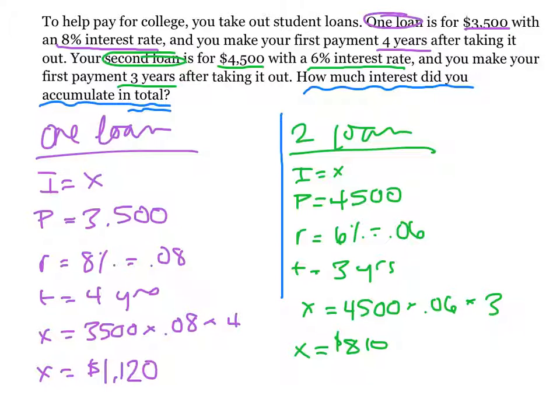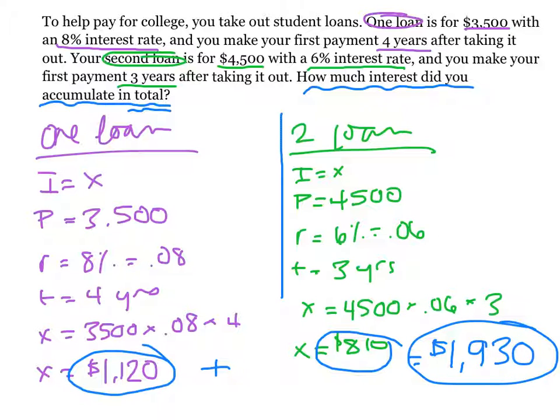However, we need to find the interest accumulated in total. And so we're going to take our first loan's interest, plus the second loan's interest. And all together, we accumulated $1,930 in interest alone. So not only do we have to pay back both of those loans, but we also now have to pay back this additional interest that accumulated. So almost an extra $2,000 on our loans.